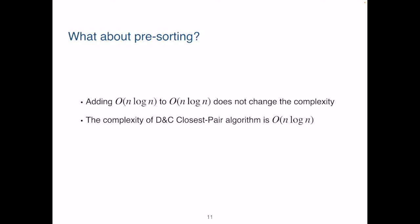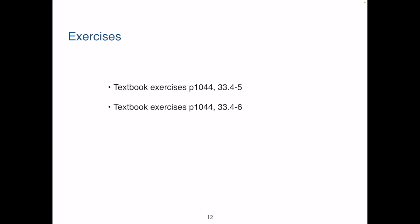So the overall complexity of the divide and conquer algorithm for a closest pair problem is still big O of n log n. Indeed, it is better than the big O of n square brute force algorithm. So we did it. We have found a more efficient algorithm.